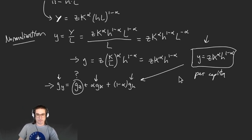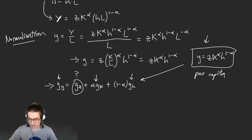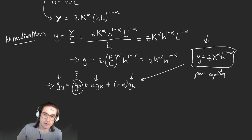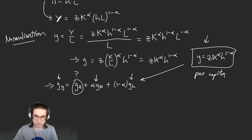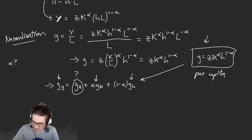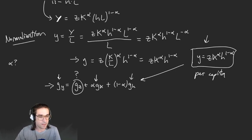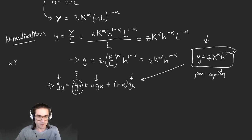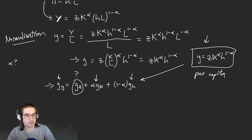That's just mathematically true given our production function. At the very end last time, we started talking about how can we measure this. Some of these things we can measure and some we can't. Remember two or three classes ago, we talked about alpha — that parameter that tells you how important capital is.